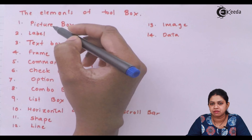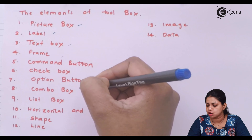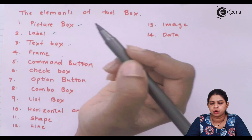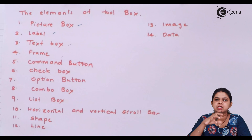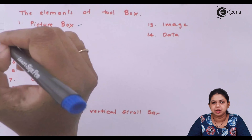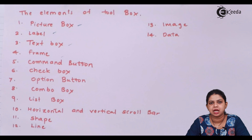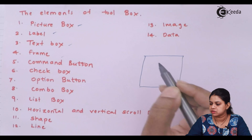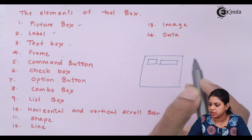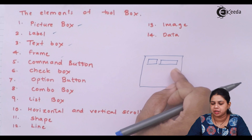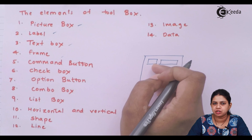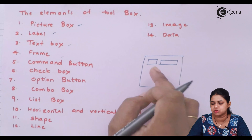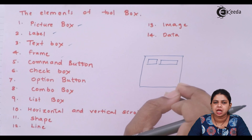The elements of the toolbox include picture box, label, text box, frame, command button, check box, option button, combo box, list box, scroll bar, shape, line, image, and data. Picture box is used to display a picture or an image. Label is a tool which is not editable at run time — it is used to display only a caption. For example, in an online application form, the caption 'Name' displayed next to the input field is a label, which is non-editable.